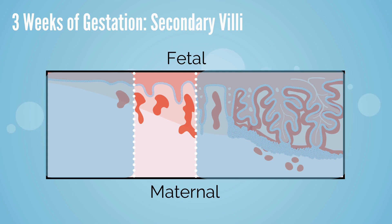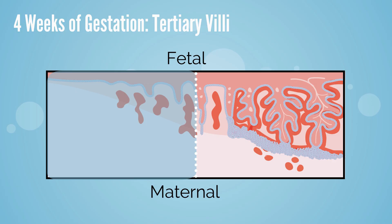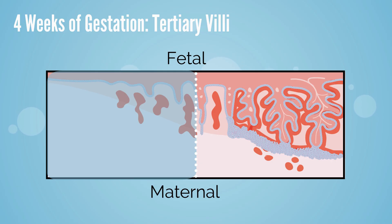At week three, the secondary villi form. During this time, the extraembryonic mesoderm grows into the villi and covers the entire surface of the chorionic sac. During the fourth week, the tertiary villi form. This week, mesenchyme differentiates into blood vessels and forms an arteriocapillary network, fuses with placental vessels, and develops connecting stalks.